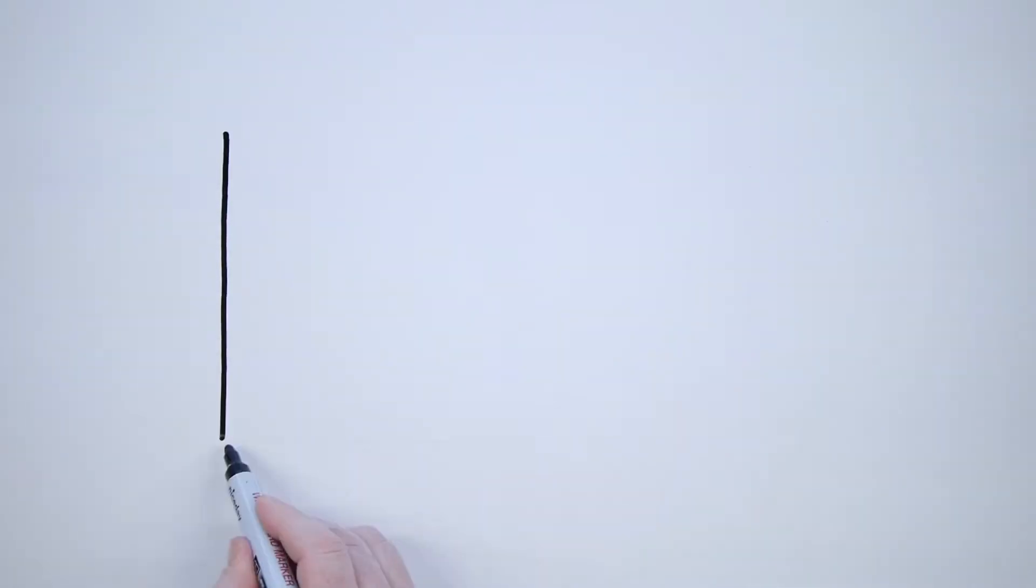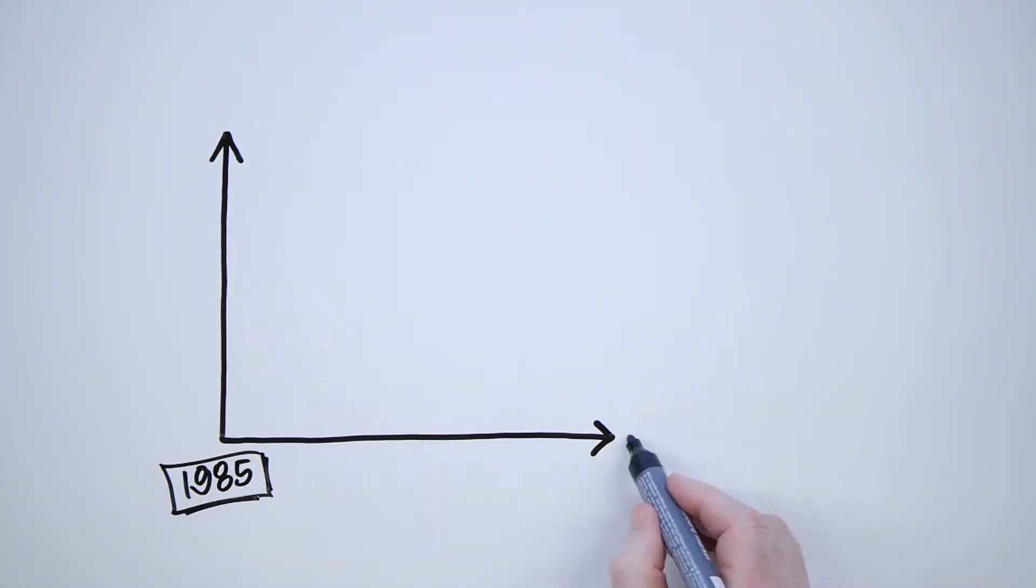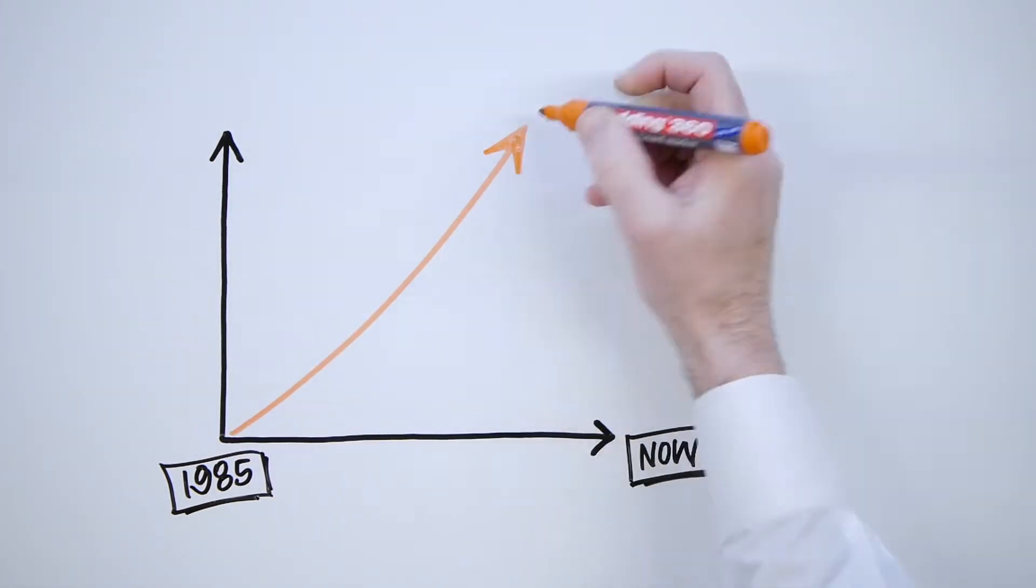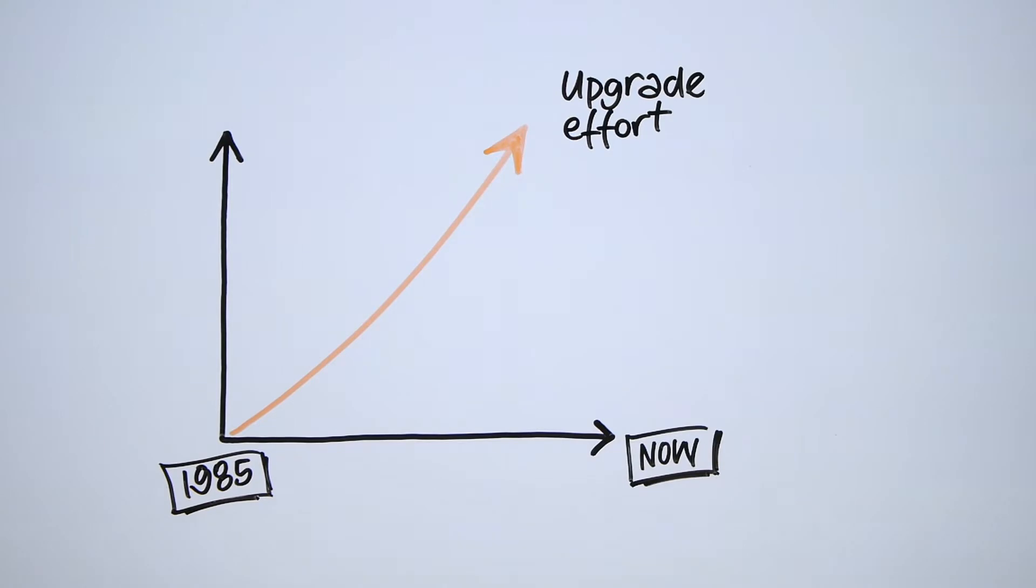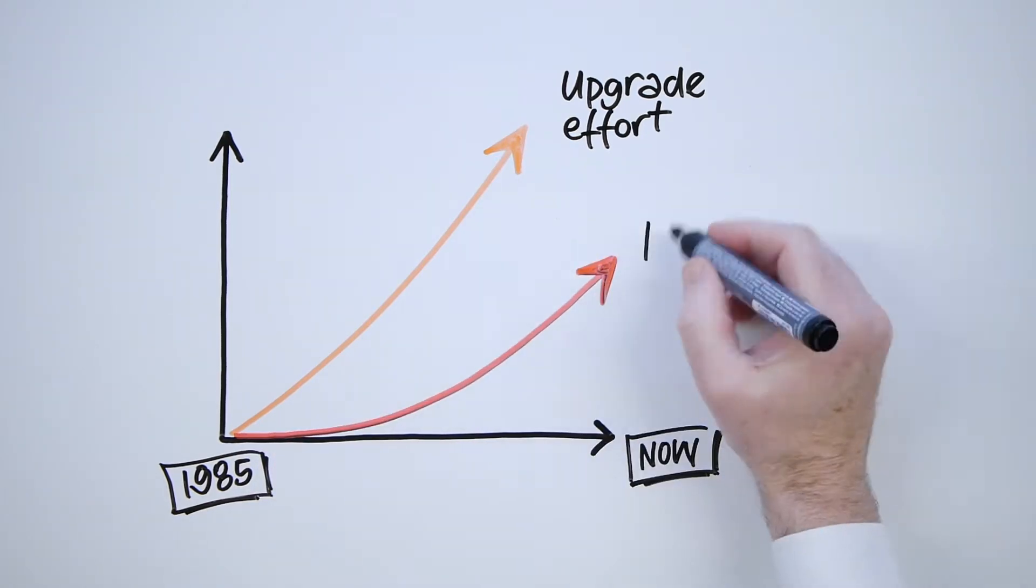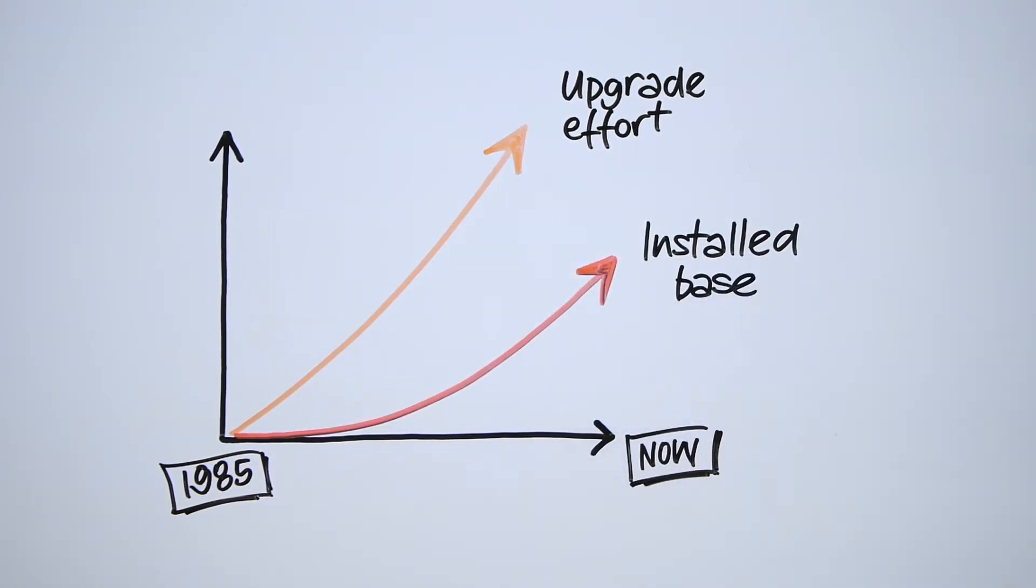New versions of the operating system are introduced to improve security, performance and connectivity. That affects thousands upon thousands of desktops. And if you think that, on average, there has been a new version of the OS every 15 months since 1985, you begin to see the problem.